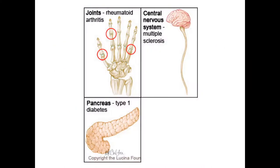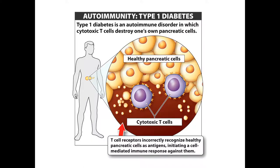The three we'll focus on are rheumatoid arthritis, type 1 diabetes, and multiple sclerosis — each affecting a different part of the body. Type 1 diabetes is where not enough insulin is being produced, and the most common cause is autoimmunity, where your immune system makes a mistake and begins to attack and kill the pancreatic cells that produce insulin. There are other causes as well.